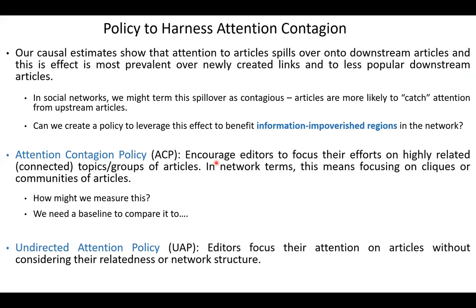This attention spill-over phenomenon caught our interest. We began to wonder: can we create a policy to leverage this effect to benefit information-impoverished regions of the network? We proposed two policies. In the first — the 'attention contagion policy' — editors focus on highly relevant groups of articles while deliberately building up the link structure around those articles. In the second — the 'undirected attention policy' (baseline) — editors focus on articles without considering the related network structure.